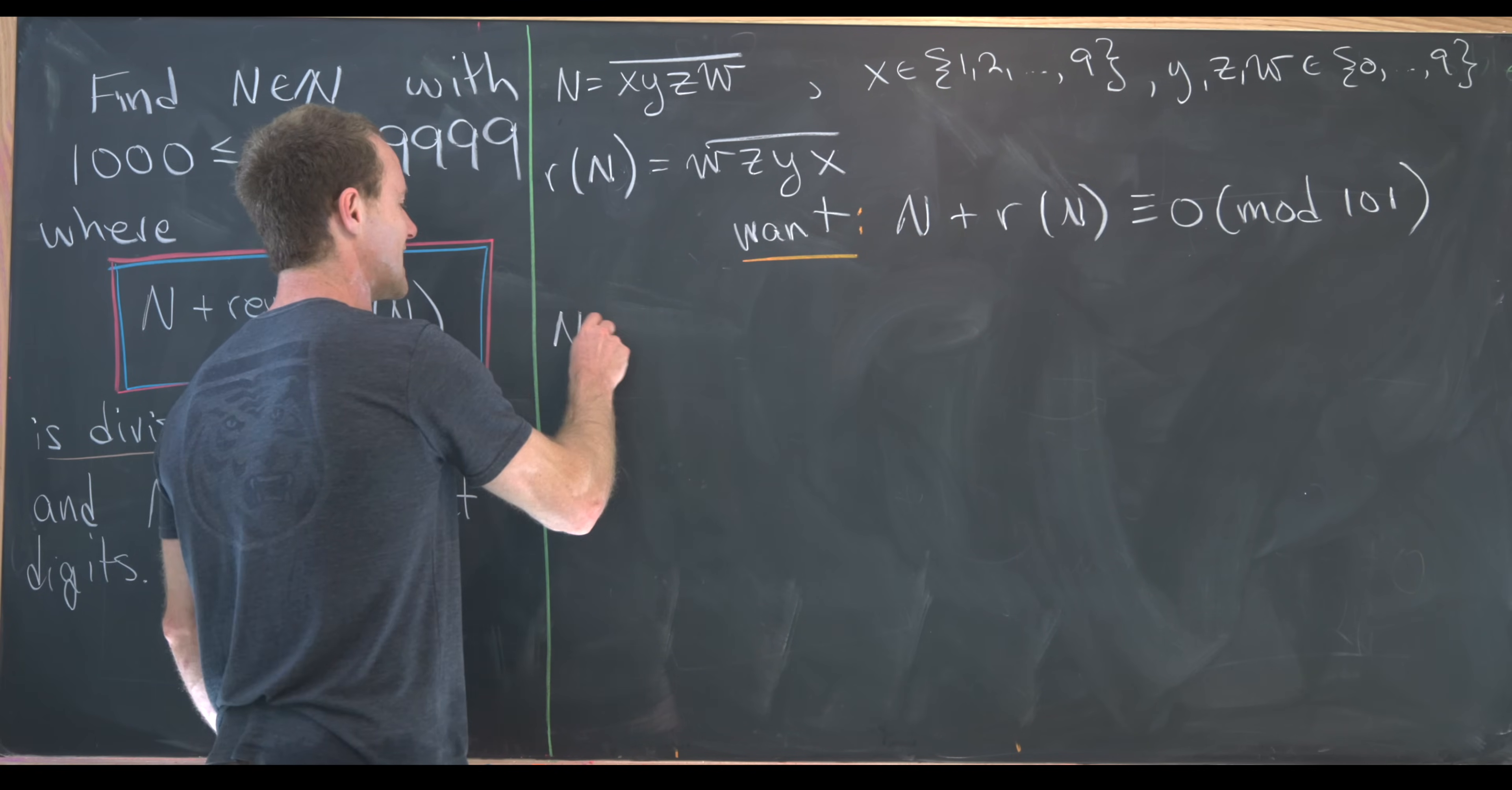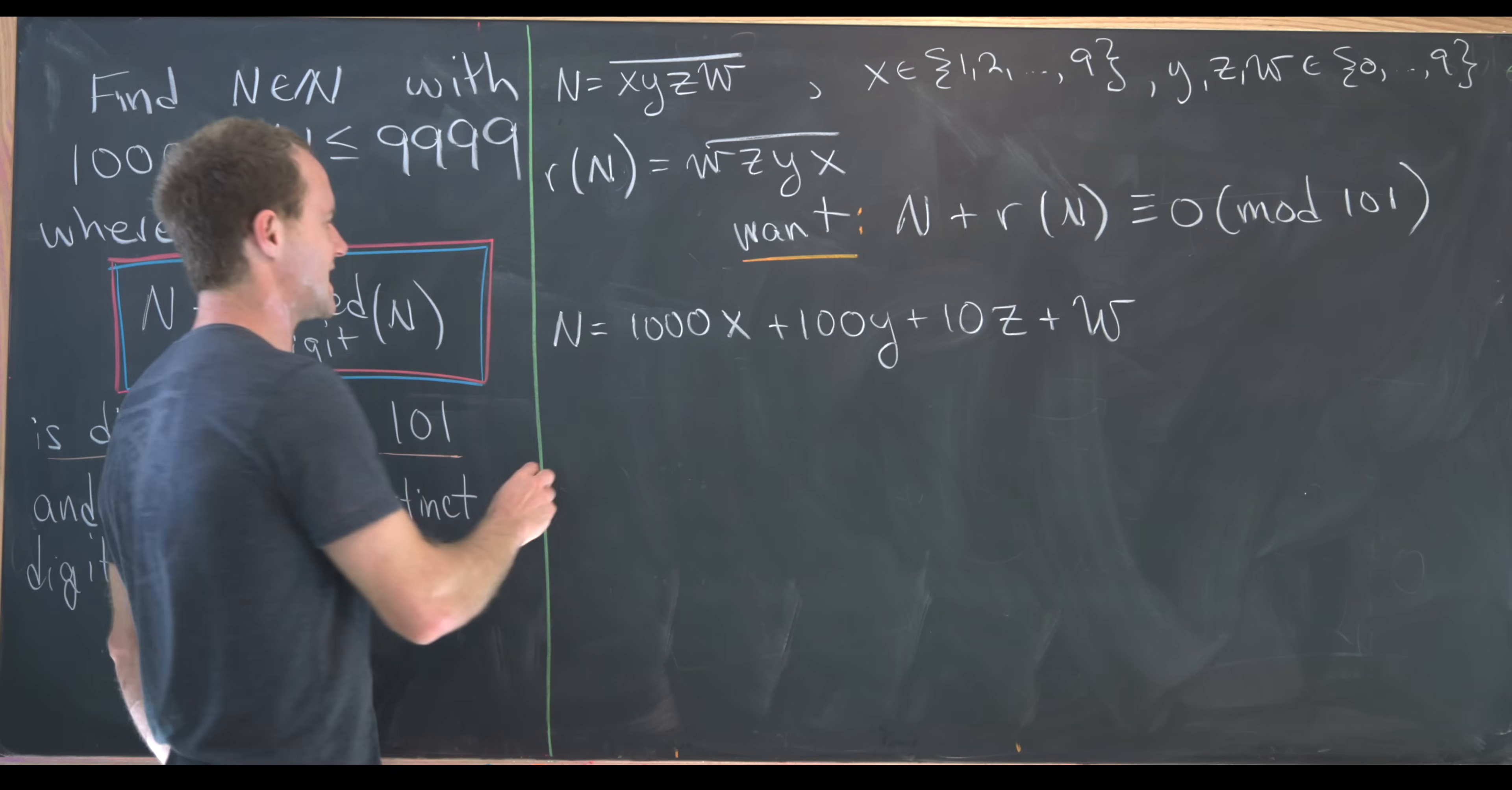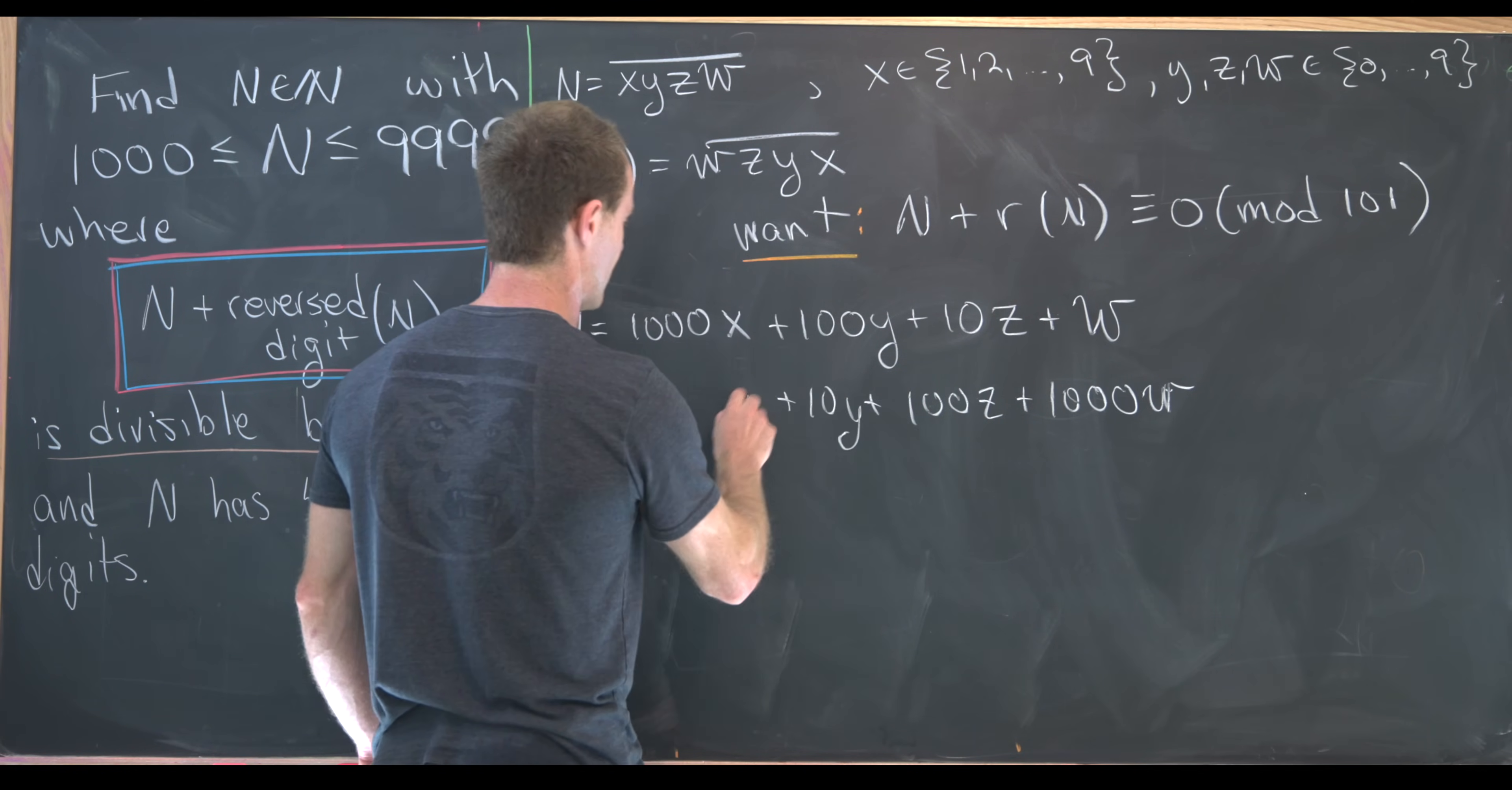So let's notice that we can take N and expand this using the base 10 representation. This is going to be 1,000 times X plus 100 times Y plus 10 times Z plus W. And then notice that the reverse digit of N, well, we can do the same thing with that. But I'm going to write the sum in reverse.